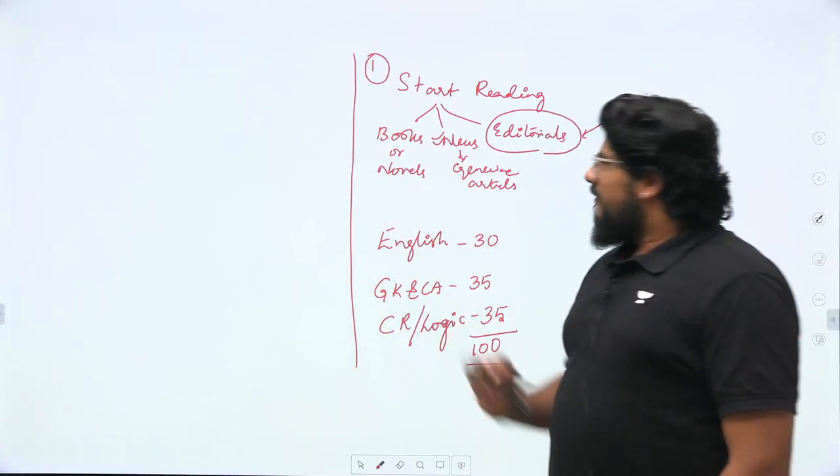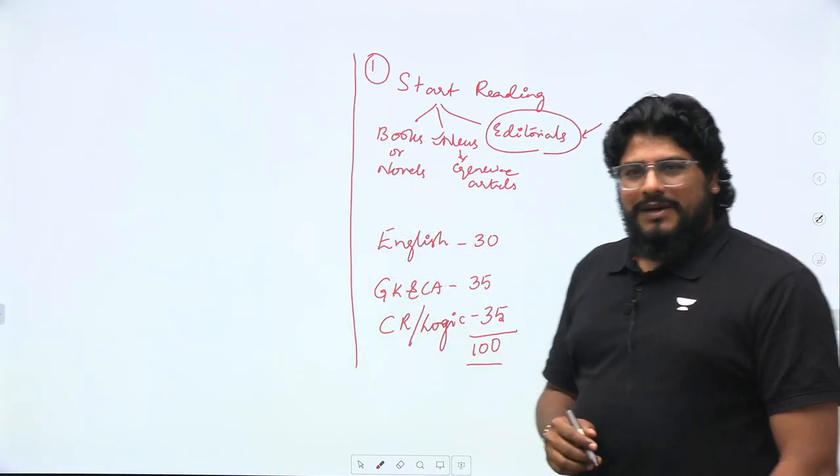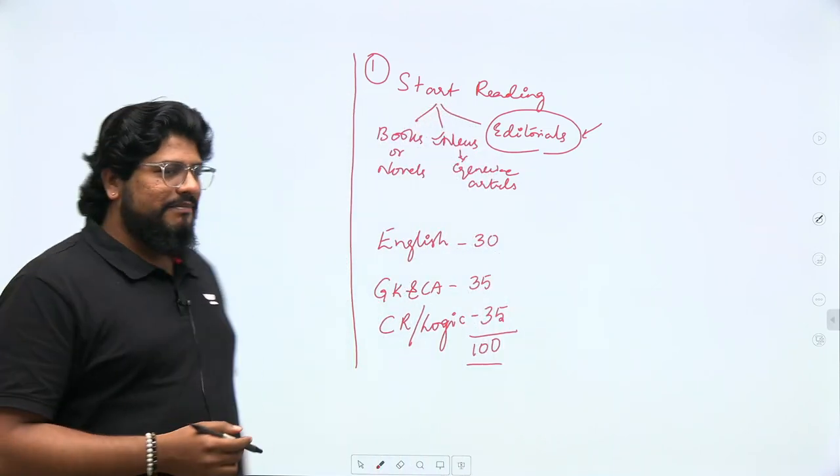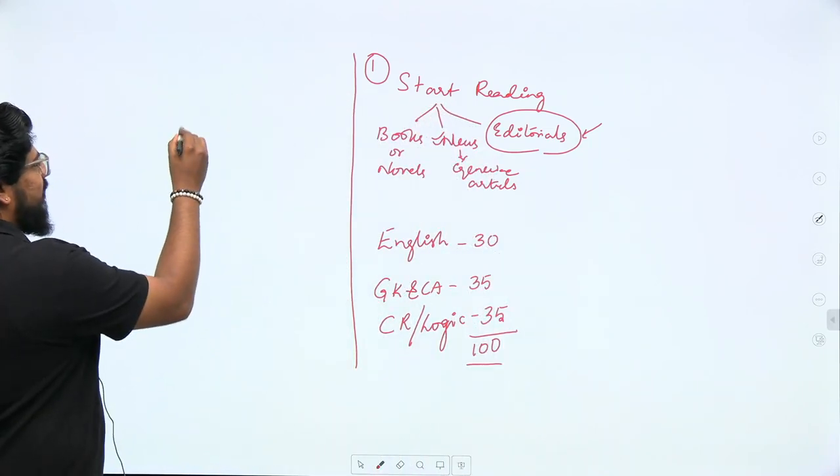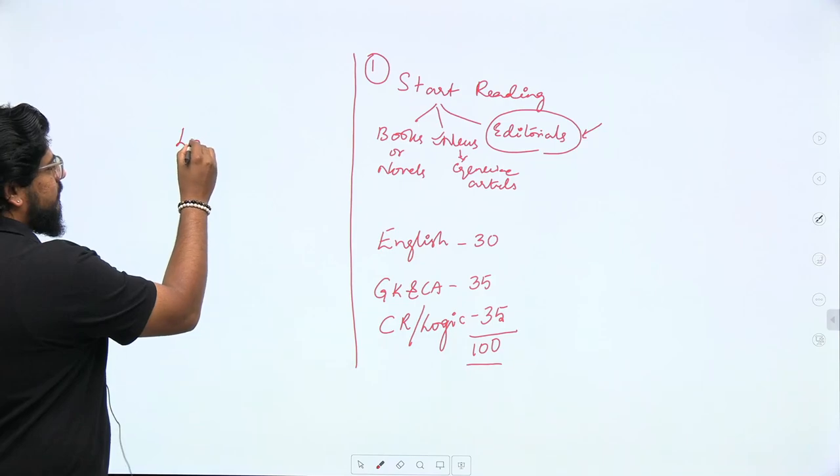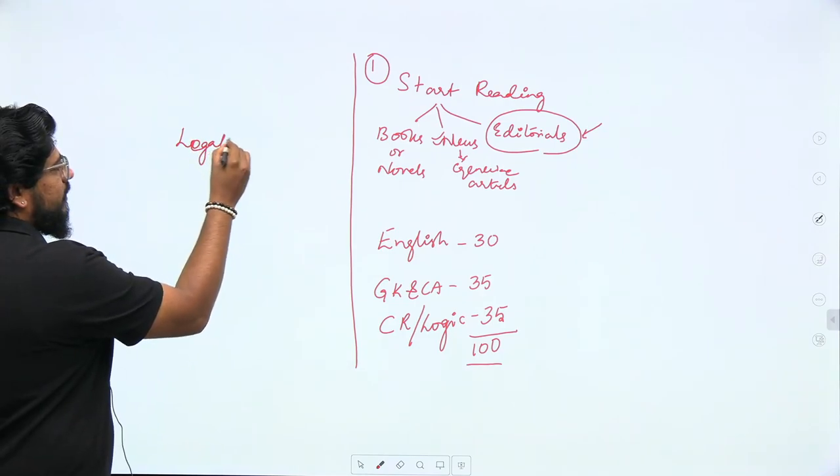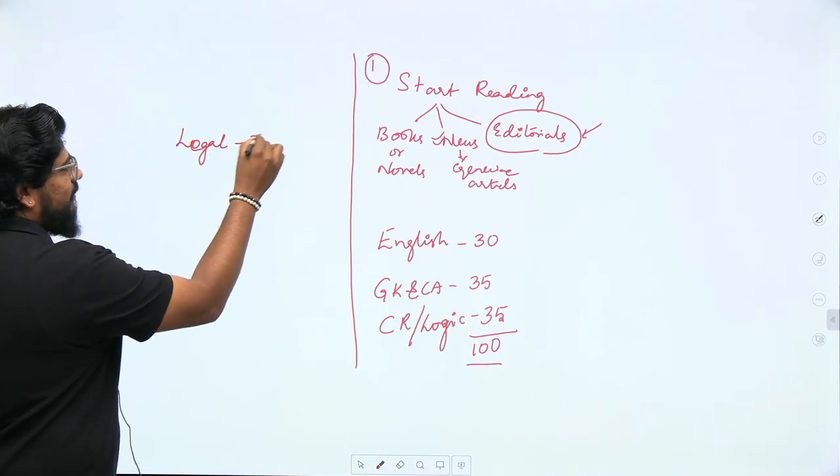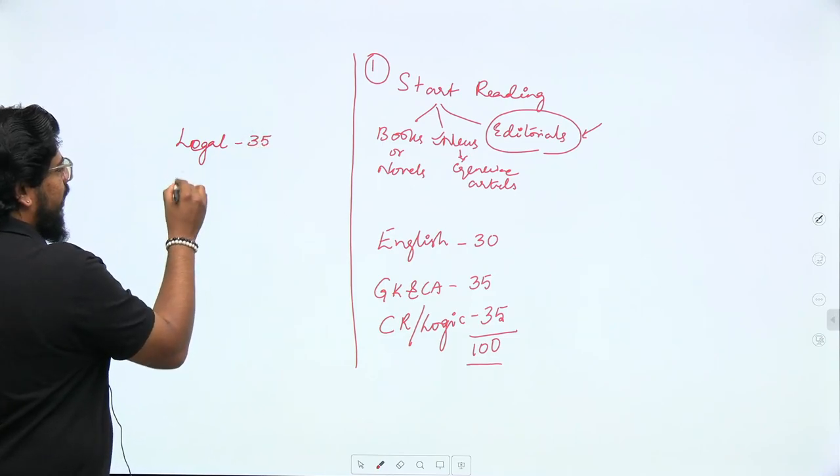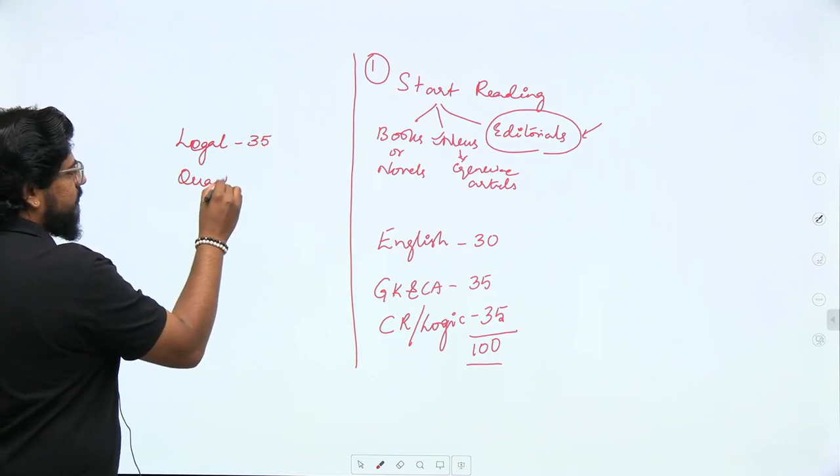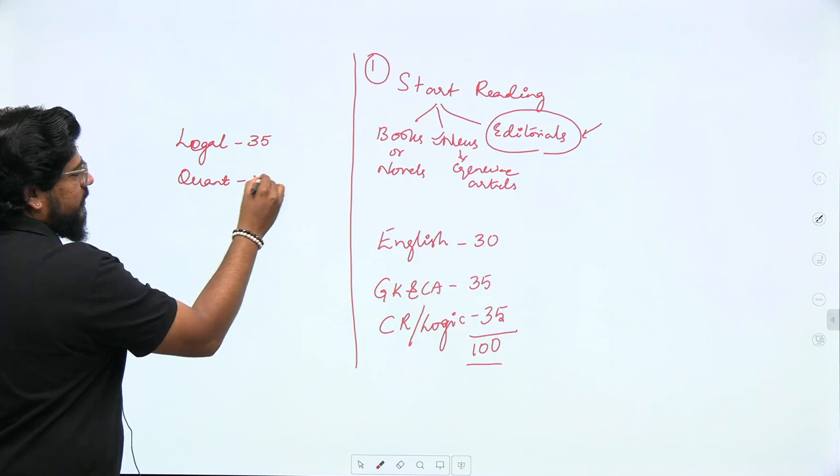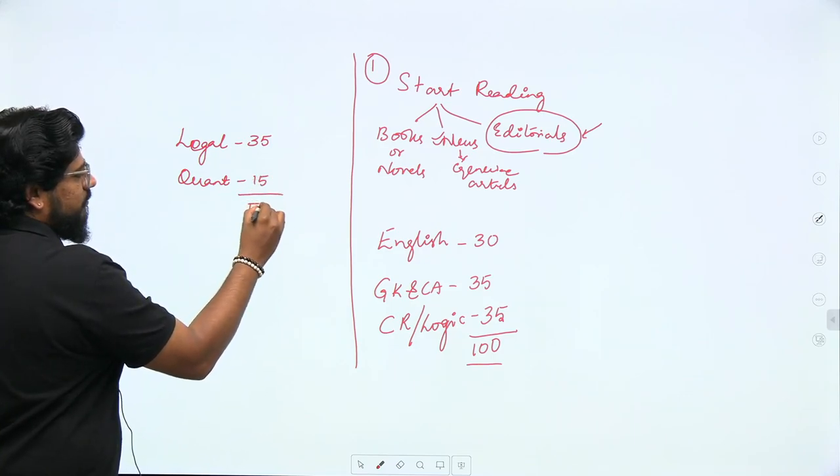Apart from this, we have 50 more questions in CLAT. How to deal with them? The remaining subjects are legal reasoning, which has 35 questions, and quants, which has 15 questions—totaling 50 questions.